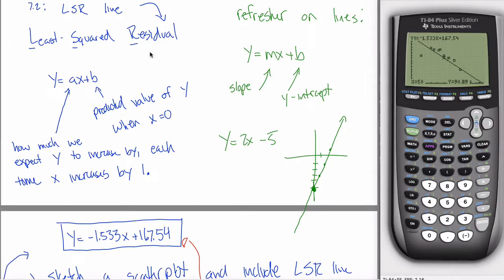In this video I want to talk about one more aspect of the least squared residual line — one last topic for 7.2, and then maybe a quick recap of all the things that we've done so far, because there are a lot of loose pieces out there, and I want to be really clear about what the expectations are in this class.